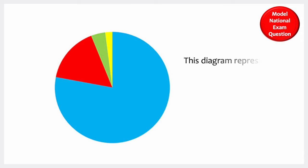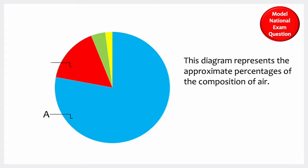wind. This diagram represents the approximate percentages of the composition of air. Identify the gases labeled A, B, C, and D.